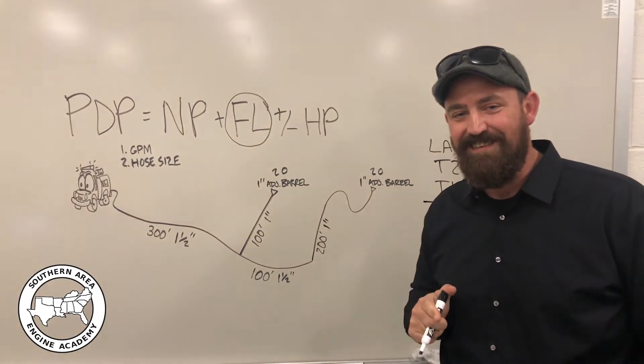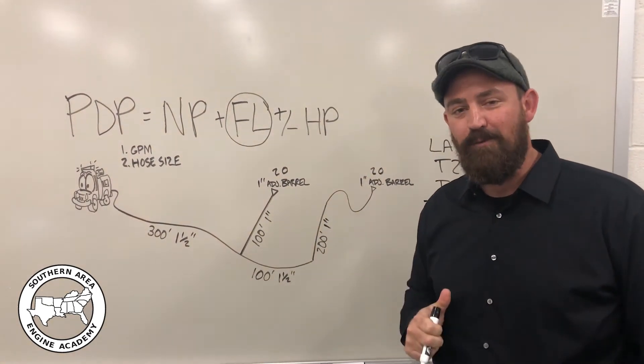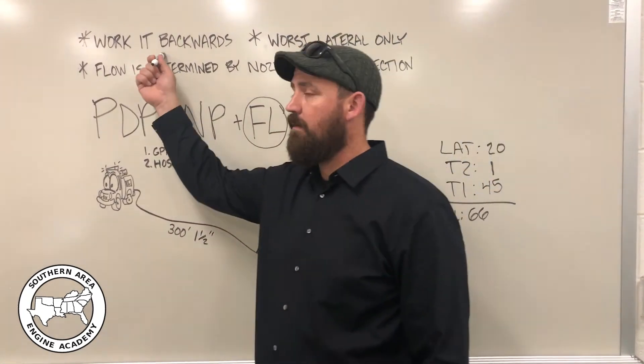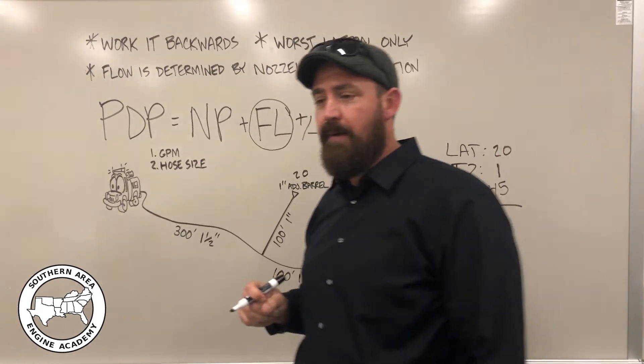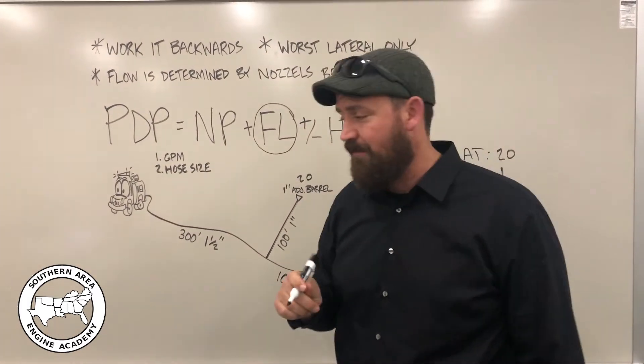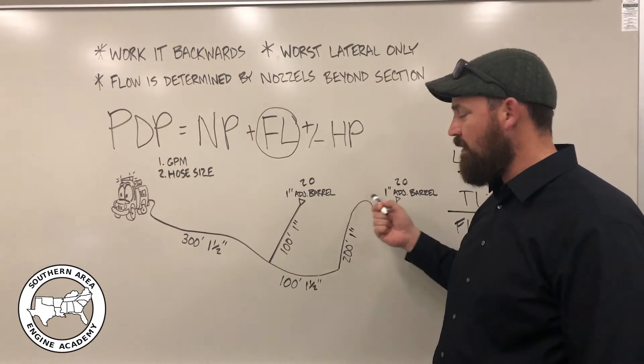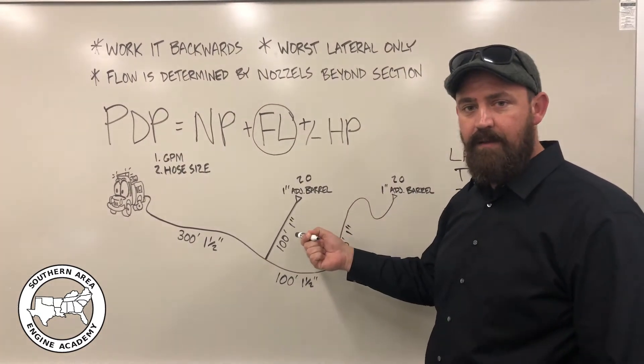Now I'm sure you have some questions at this point, so we'll cover the rules of thumb. So we already touched on our first rule of thumb, which is to work the problem backwards. But one question that many of you may have is, why did we only determine the friction loss for this one lateral? What about this guy over here?